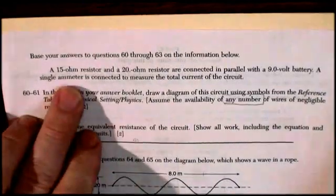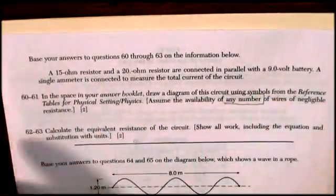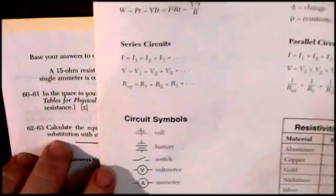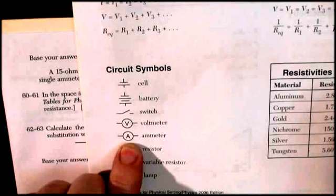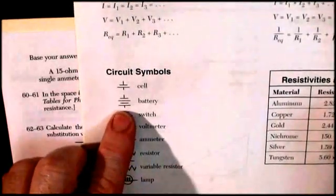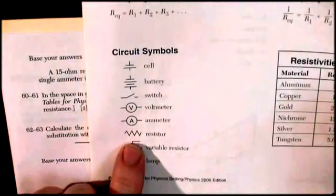So we want a circuit with a 15 ohm resistor, a 20 ohm resistor, a 9-volt battery, and an ammeter. And if we go to our circuit symbols, we have these things. An ammeter has an A in it, a battery has a couple of these things in it, and a resistor is this squiggly wire.